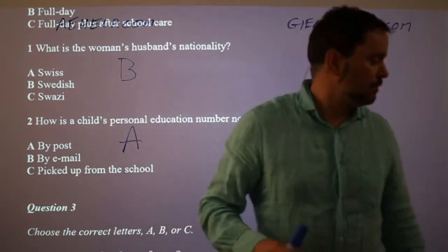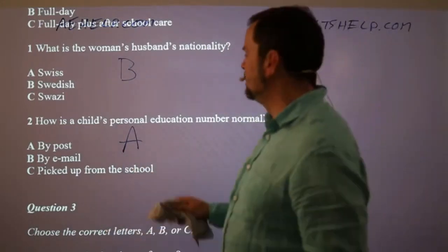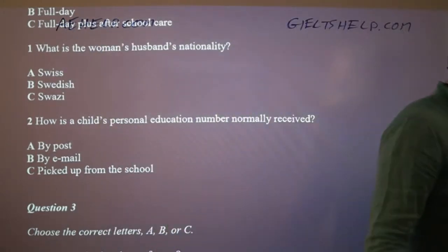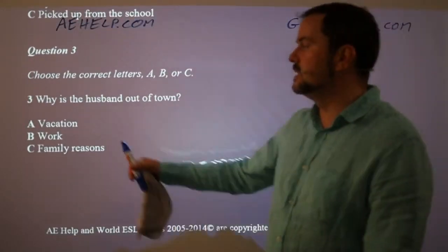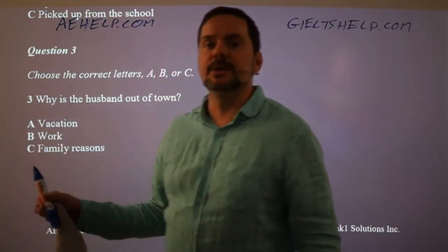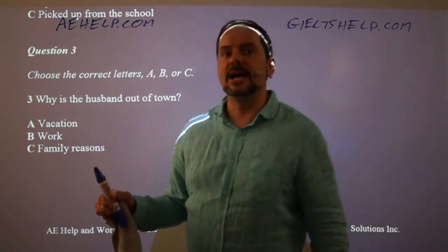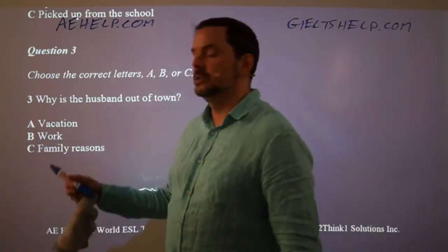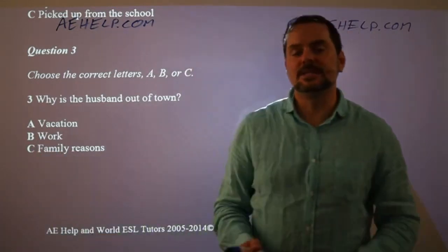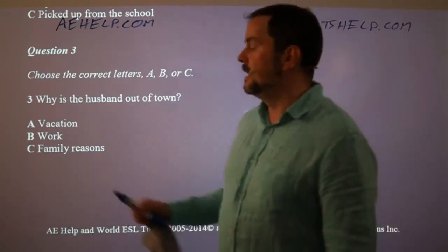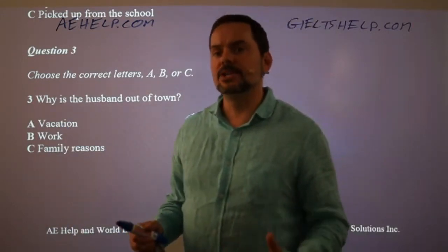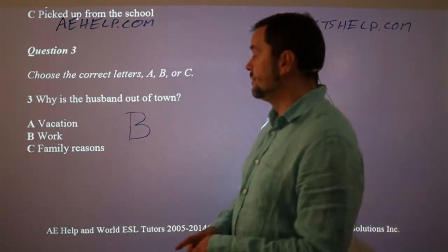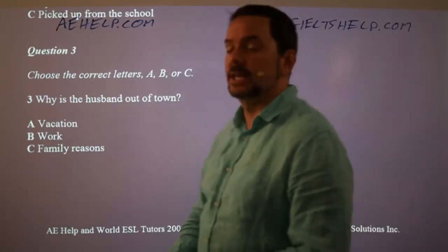How is a child's personal education number normally received? A, by post. Don't get distracted when they're spelling the names. Stay focused. And if you miss it, don't panic. They usually repeat it. Next multiple choice question. Now, always listen for the answer. Don't just look at the choices, but listen for the answer. Why is the husband out of town? That was work. So everybody got that B. The woman says he's away with work.